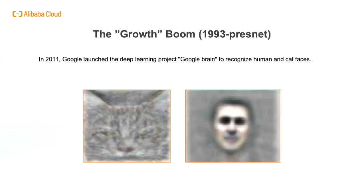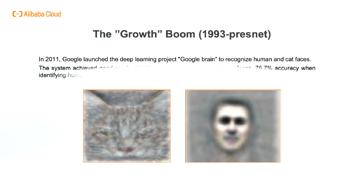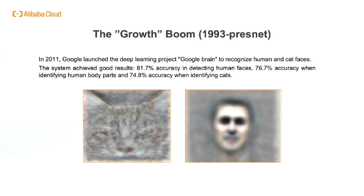In 2011, Google launched the deep learning project Google Brain to recognize human and cat faces. When computer scientists at Google's X lab built a neural network of 16,000 computer processors with one billion connections and let it browse YouTube, it began to look for cats. The brain simulation was exposed to 10 million randomly selected YouTube video thumbnails over three days, and after being presented with a list of 20,000 different items, it began to recognize pictures of cats using a deep learning algorithm. The system achieved 81.7% accuracy in detecting human faces, 76.7% accuracy in identifying human body parts, and 74.8% accuracy in identifying cats.